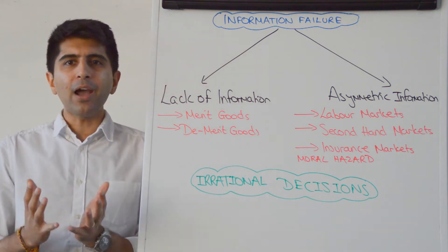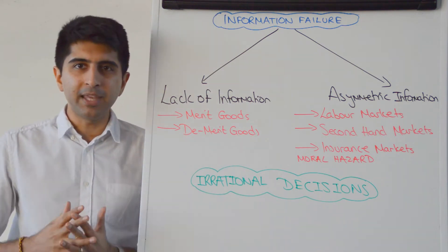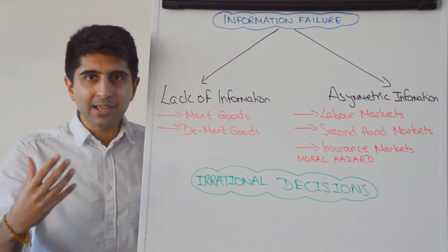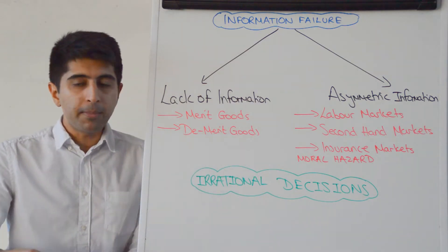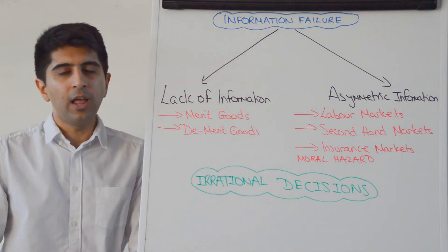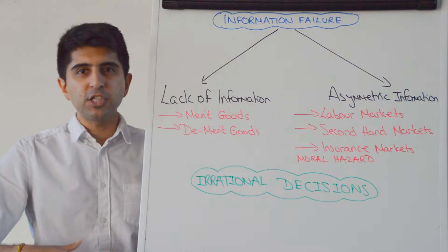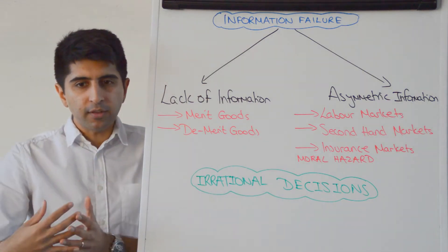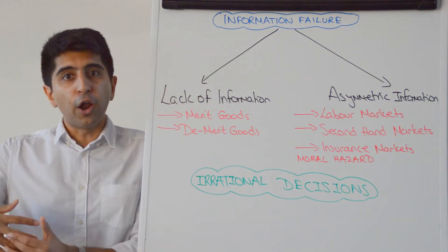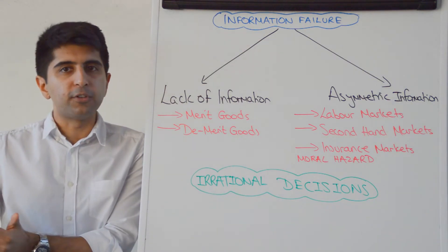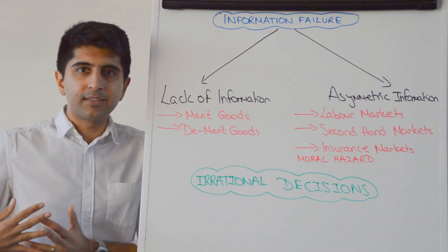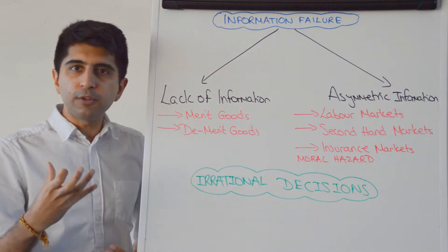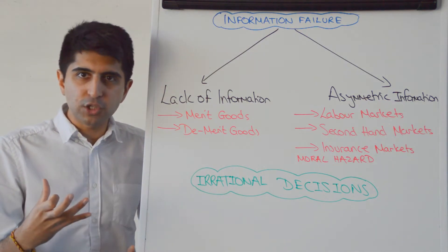Well in the real world, how can information be imperfect? In two ways. There might be a lack of information — maybe information doesn't exist at all, maybe information isn't presented clearly. The problem as a result could be an overconsumption or an underconsumption taking place where consumers make irrational decisions.